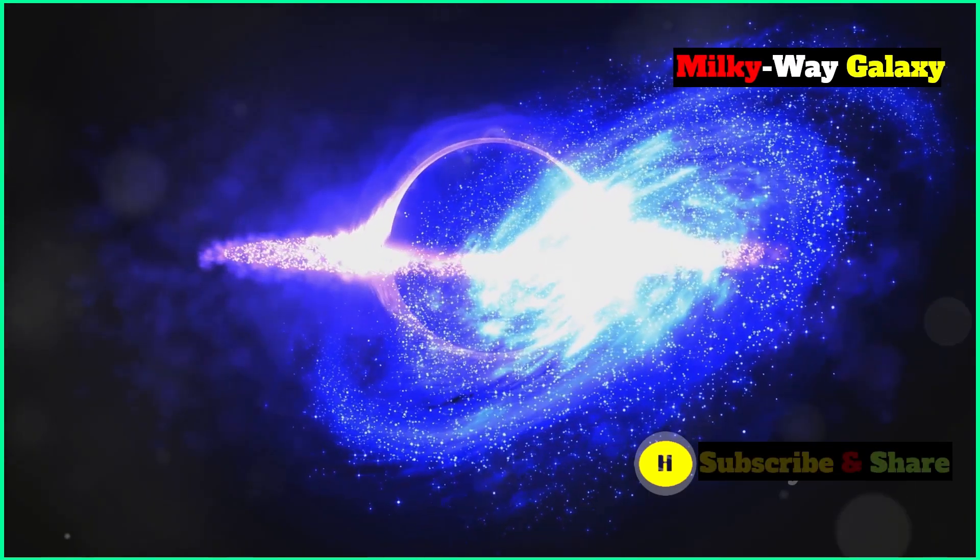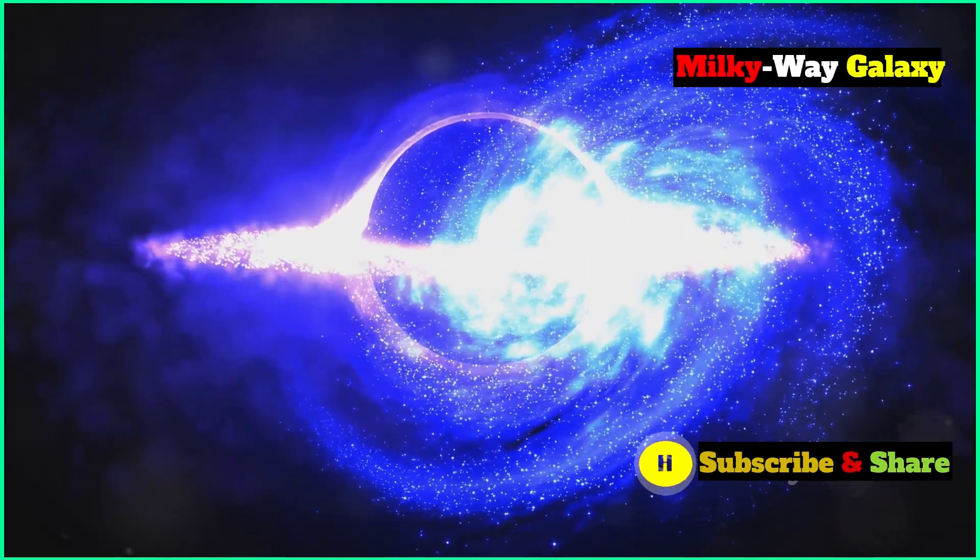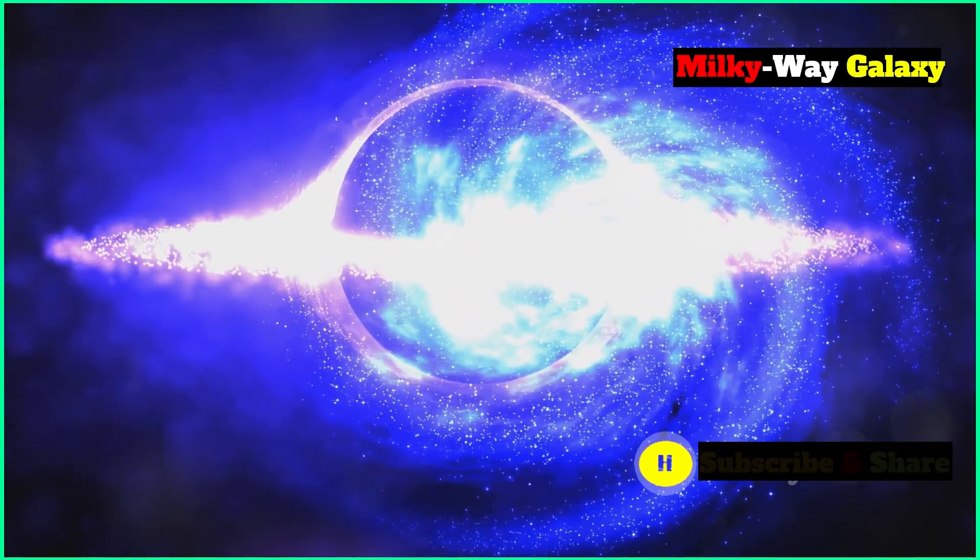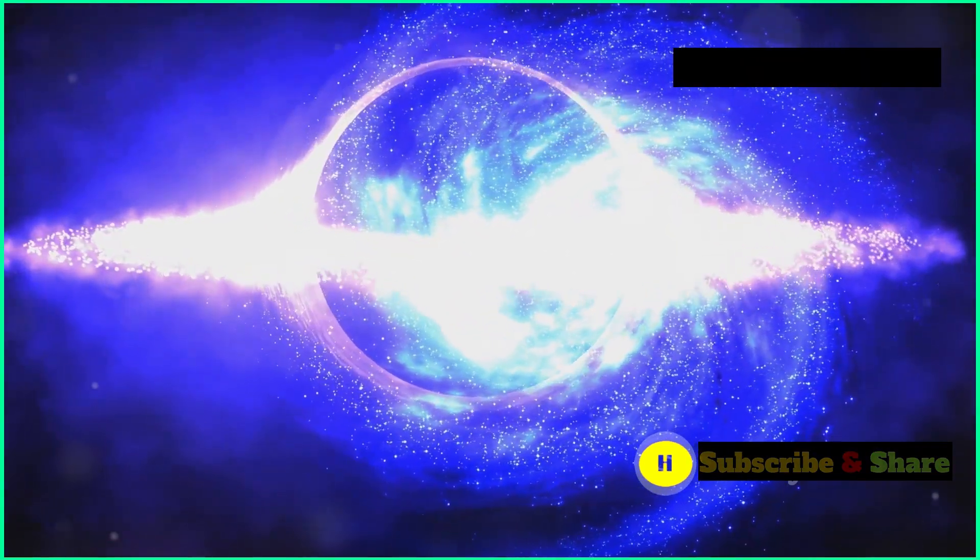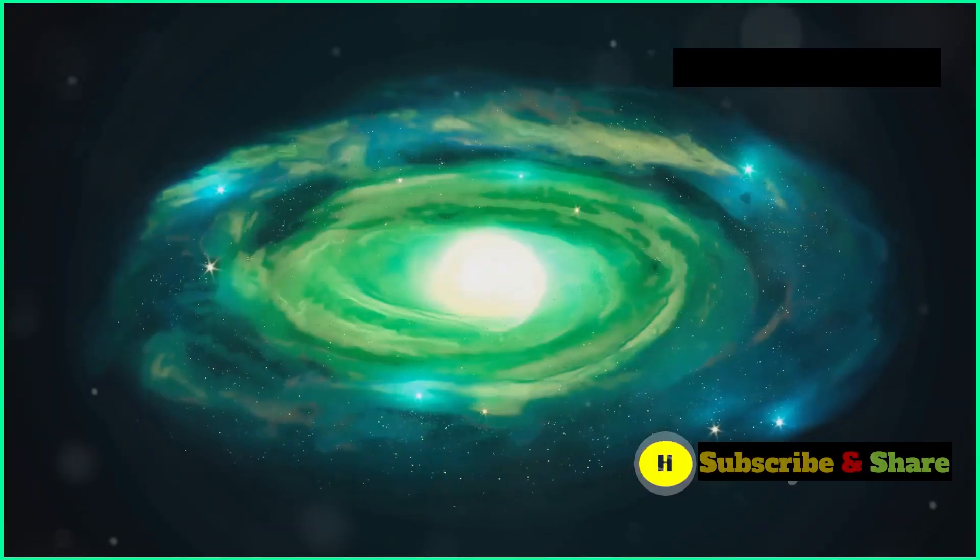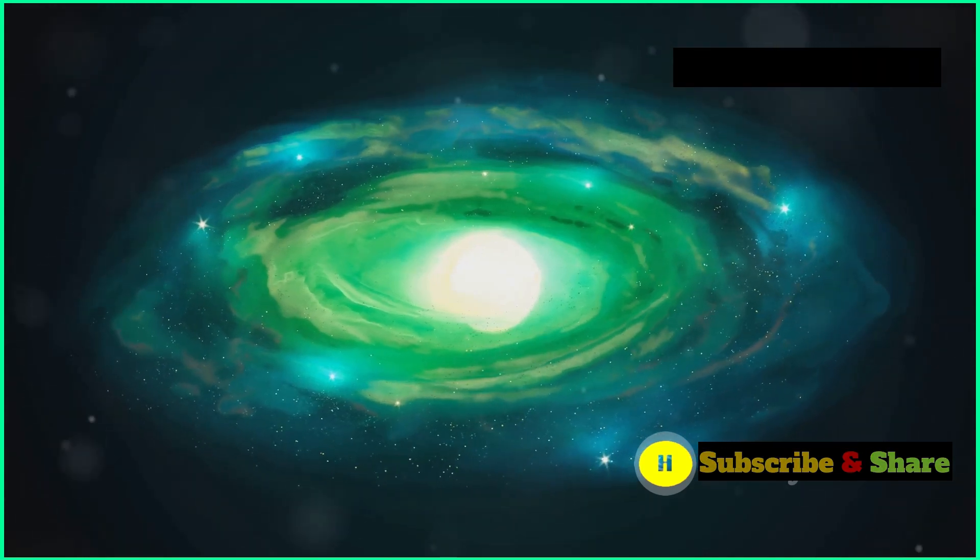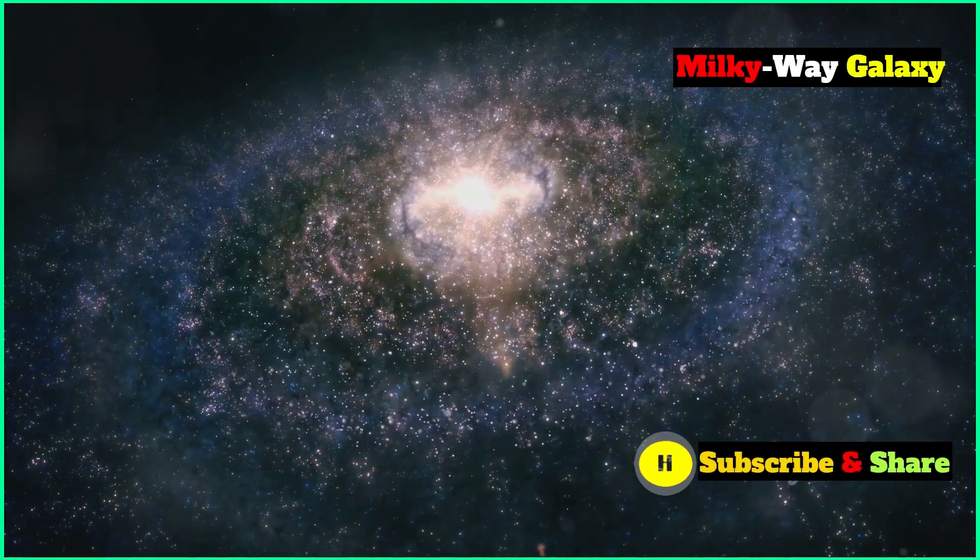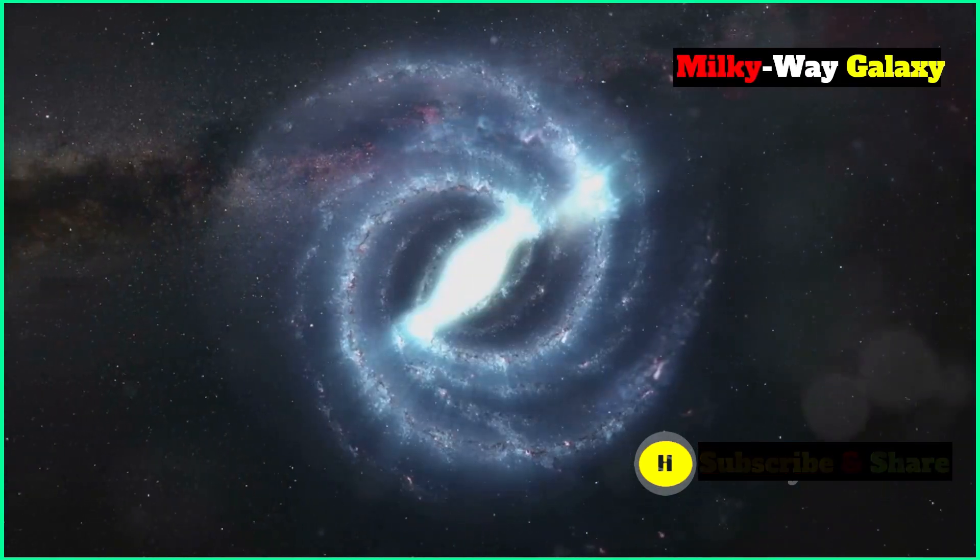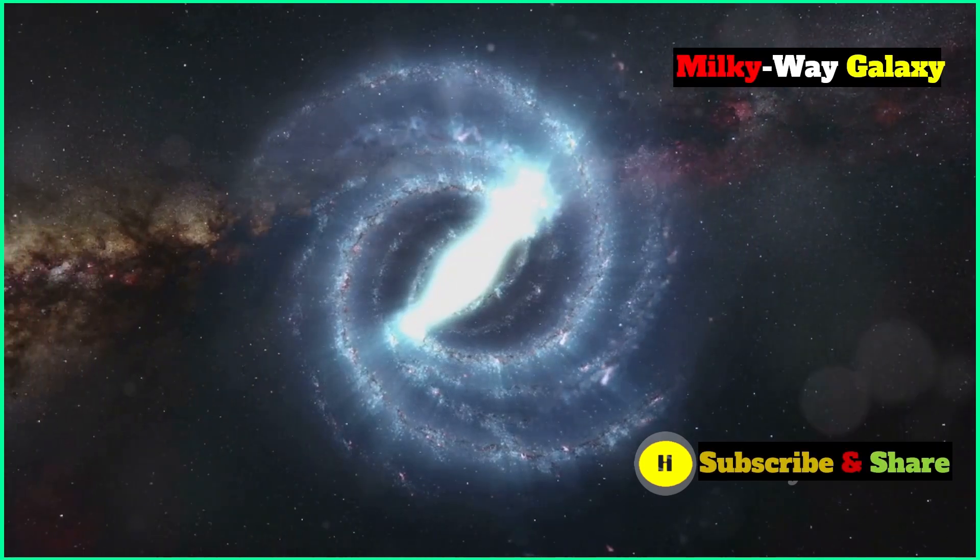Now this is where it gets wild. Those supermassive black holes, they're not going to sit this one out. They'll spiral towards each other, like a cosmic waltz gone wrong, releasing a ridiculous amount of energy. But out of all this chaos, a new galaxy will be born. And this new galaxy, we call it Milkomeda, a bit of a mouthful. It'll be an elliptical galaxy, bigger than both the Milky Way and Andromeda combined, a real whopper. And instead of those fancy spiral arms, it'll be smooth and oval-shaped like a giant cosmic egg.